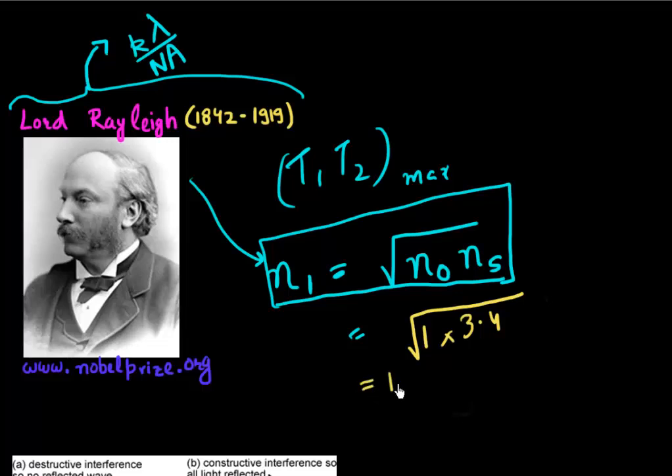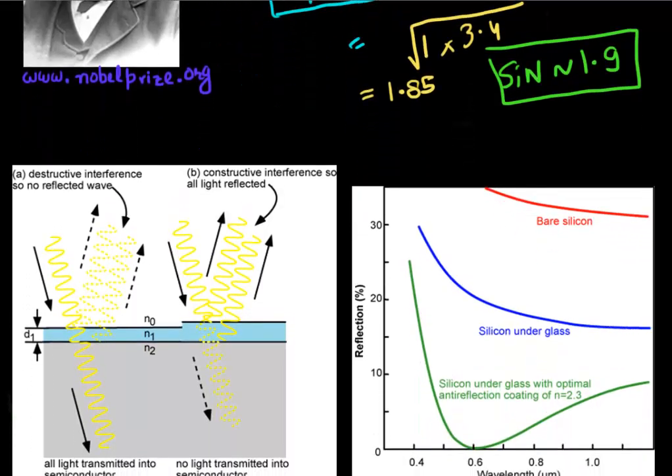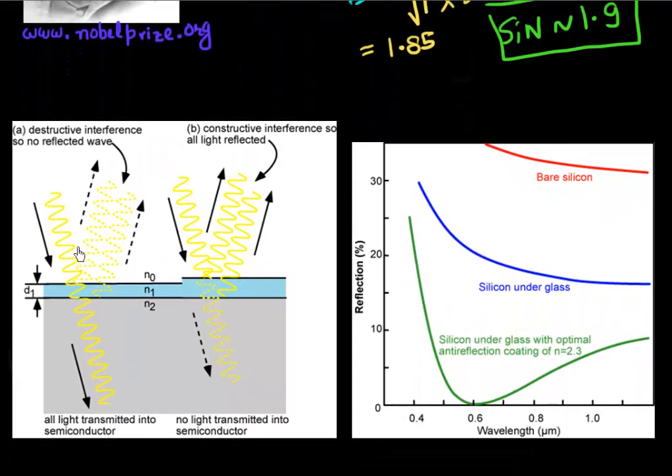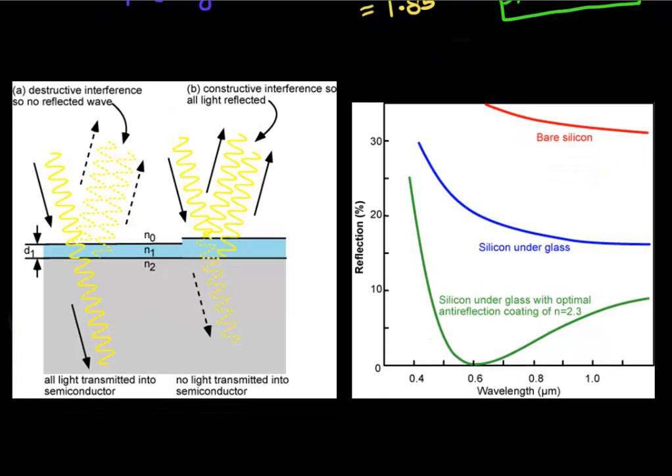So this number is 1.85. And this, in fact, is very close to the refractive index of silicon nitride, which has a refractive index of approximately 1.9. So just by the virtue of this math, we derive that our optimum material to make this anti-reflective coating, silicon nitride would be a good choice.